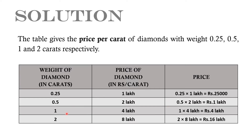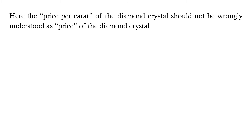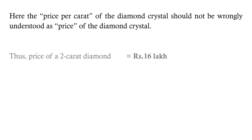In the case of a 1 carat diamond, the price of the crystal is Rs. 4 lakh. In the case of a 2 carat diamond, the price of the crystal is Rs. 16 lakh. Note: the price per carat of a diamond should not be wrongly understood as the price of the diamond crystal.